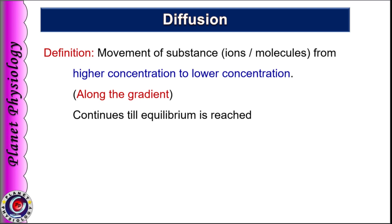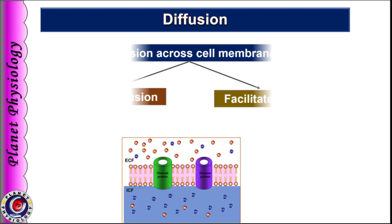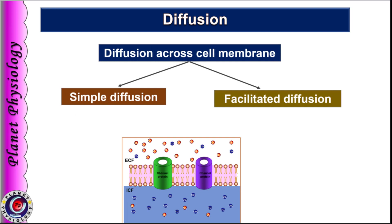Diffusion across the cell membrane can be of two types: simple diffusion and facilitated diffusion. For simple diffusion, a carrier protein is not required, but facilitated diffusion occurs with the help of a carrier protein. Simple diffusion can take place either directly through the cell membrane or with the help of various channel proteins.